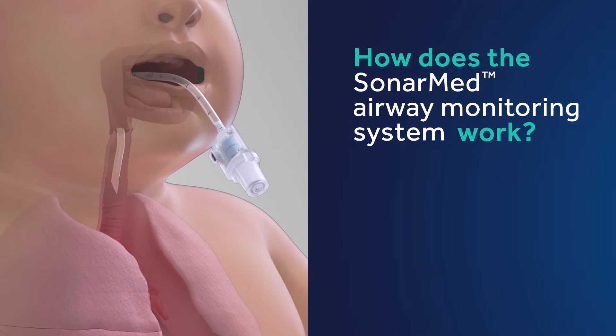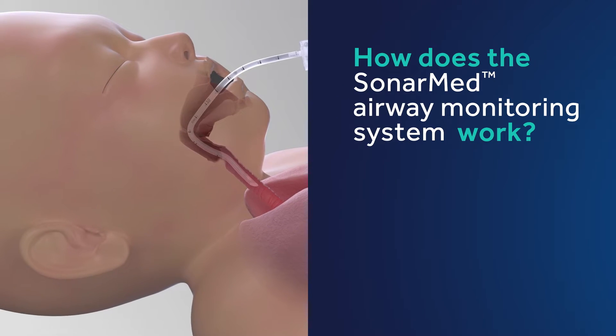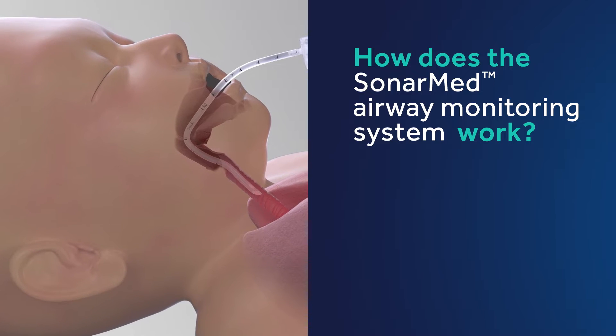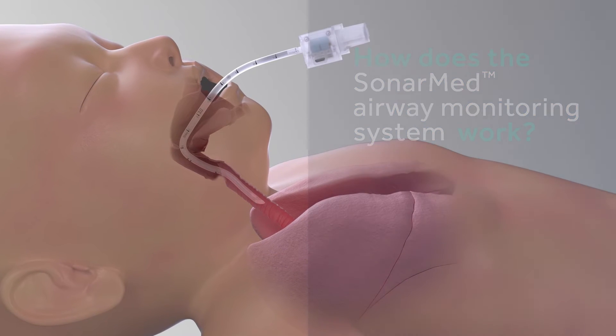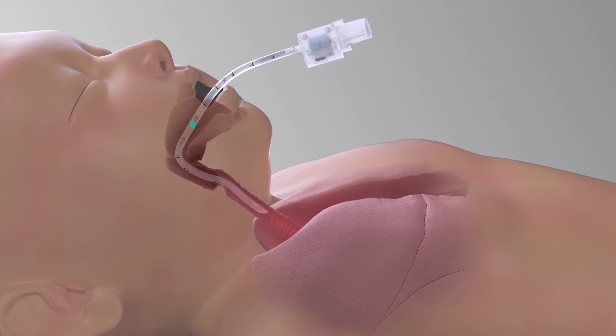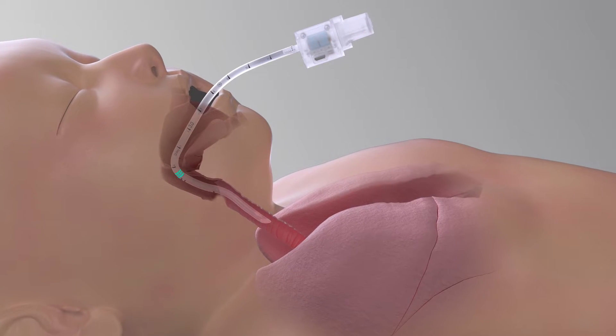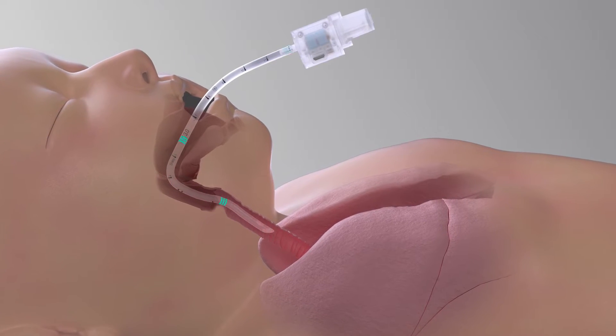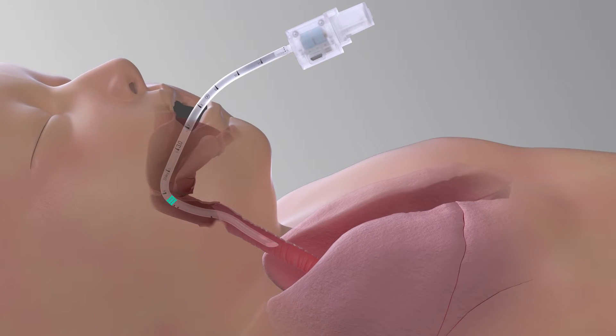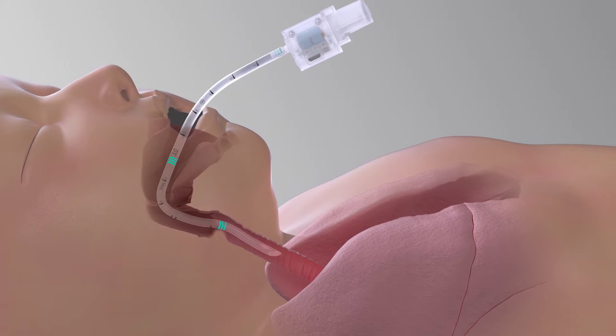This unique device uses acoustic reflectometry technology to monitor the set optimal position of the ETT in the trachea. The SonarMed Sensor emits sound waves through the tube and then measures the intensities and timing of the echoes as they return, allowing us to detect several key measures.